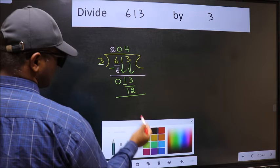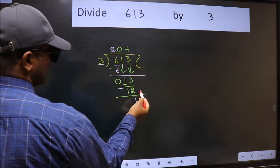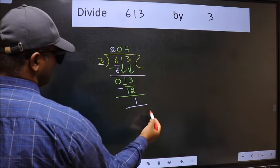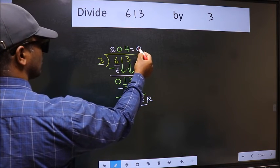Now we should subtract. We get 1. No more numbers to bring down, so we stop here. This is our remainder and this is our quotient.